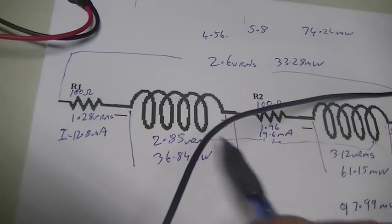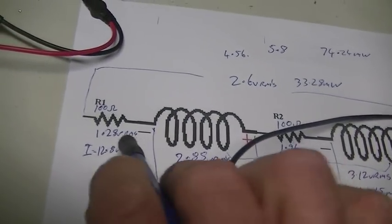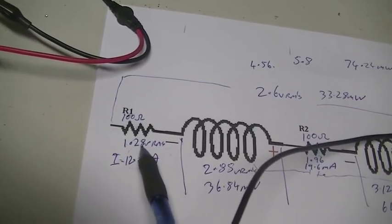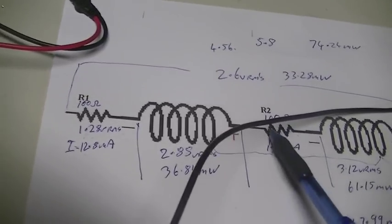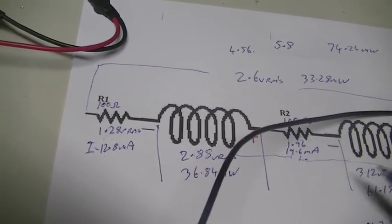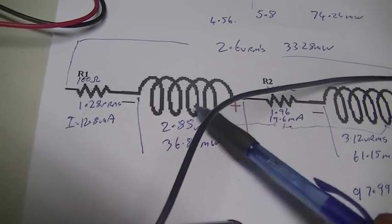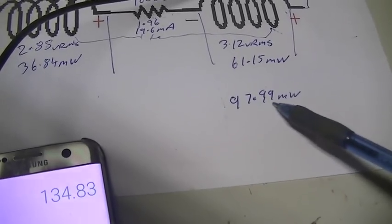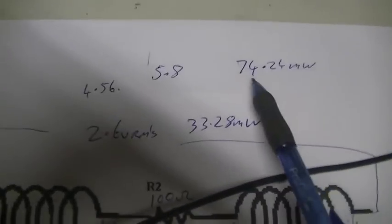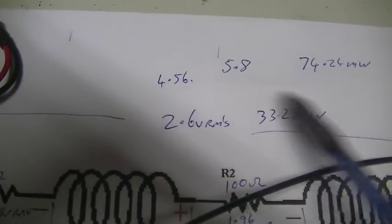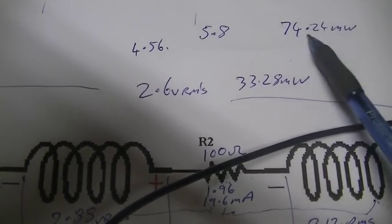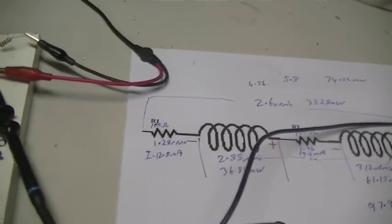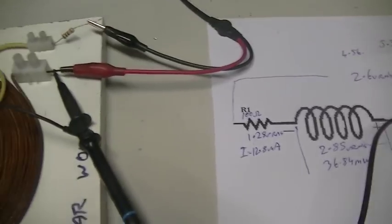So if we add our 61.15, plus our other one, which is 36.84, we have a total of 97.99 milliwatts of power being dissipated by just both coils, this is not with our resistors, which you can calculate, 1.28 volts over 100 ohms, using ohms law will tell you how much each resistor is dissipating, we now know how much each coil and both together are dissipating, which is 97.99 milliwatts, but our total input energy was 74.24 milliwatts.